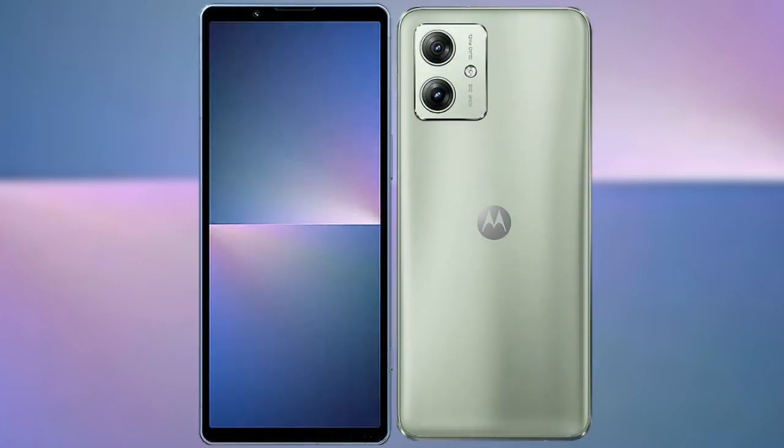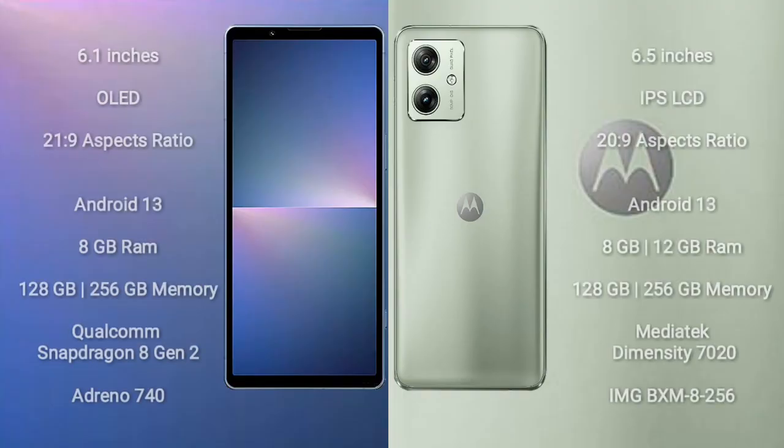I will compare the new Sony Xperia 5 Mark V with Motorola Moto G54. Sony Xperia 5 Mark V comes with a 6.1 inches OLED display and aspect ratio 21x9. Motorola Moto G54 comes with a 6.5 inches IPS LCD and aspect ratio 20x9.